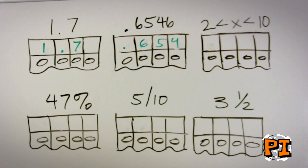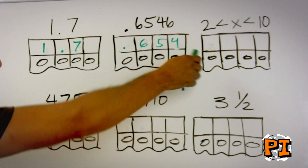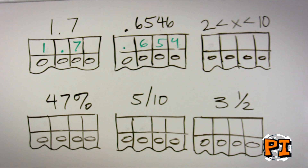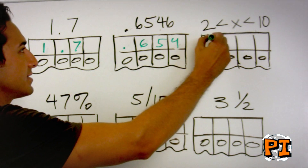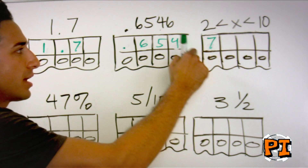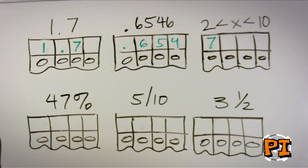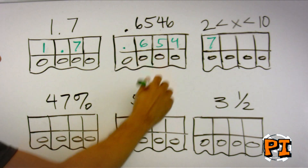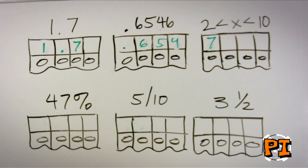Let's say you had another question where you had a range of numbers as possible answers, such as in this case where the number is between 2 and 10. Any one of those will do — pick one. Say 7. Stay on the left-hand side, bubble it in, and move on.